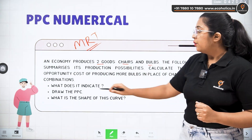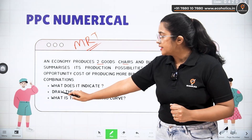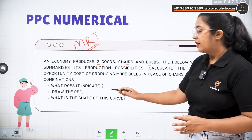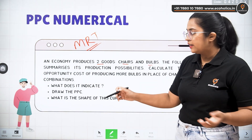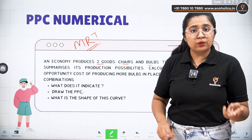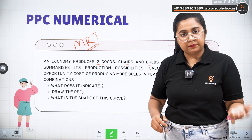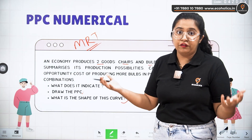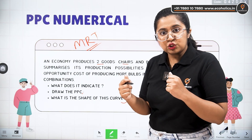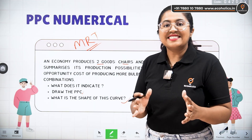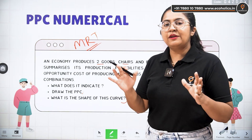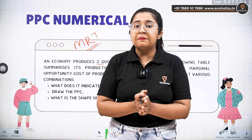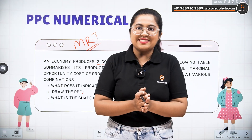We need to address three questions. First: what does this indicate? Second: draw the PPC. Third: what is the shape of the PPC? So let's start solving this simple numerical and understand the concept of PPC holistically.